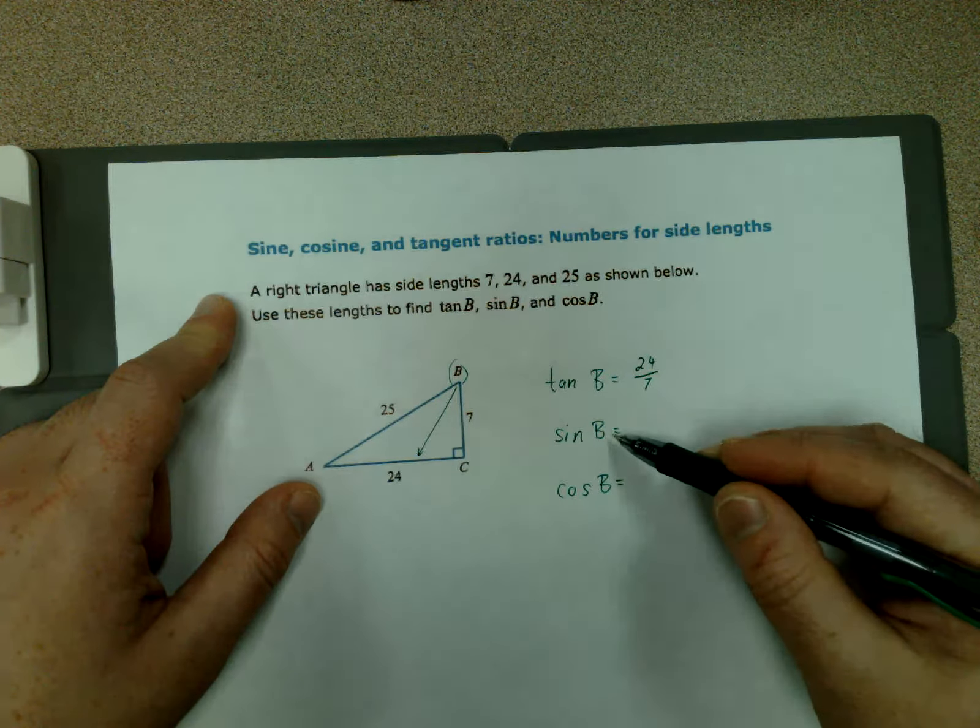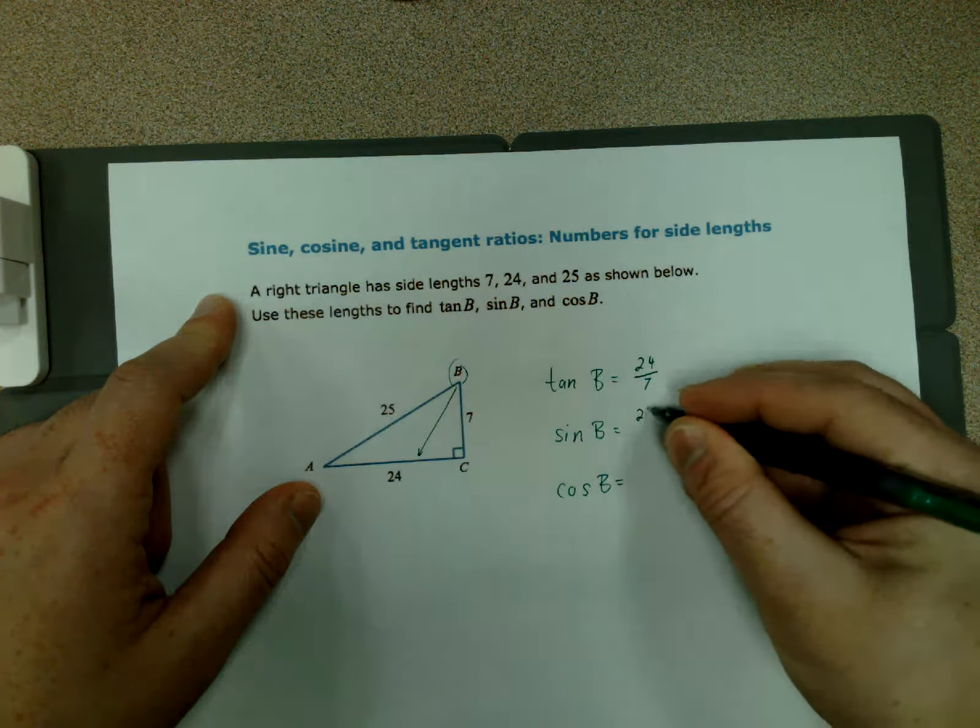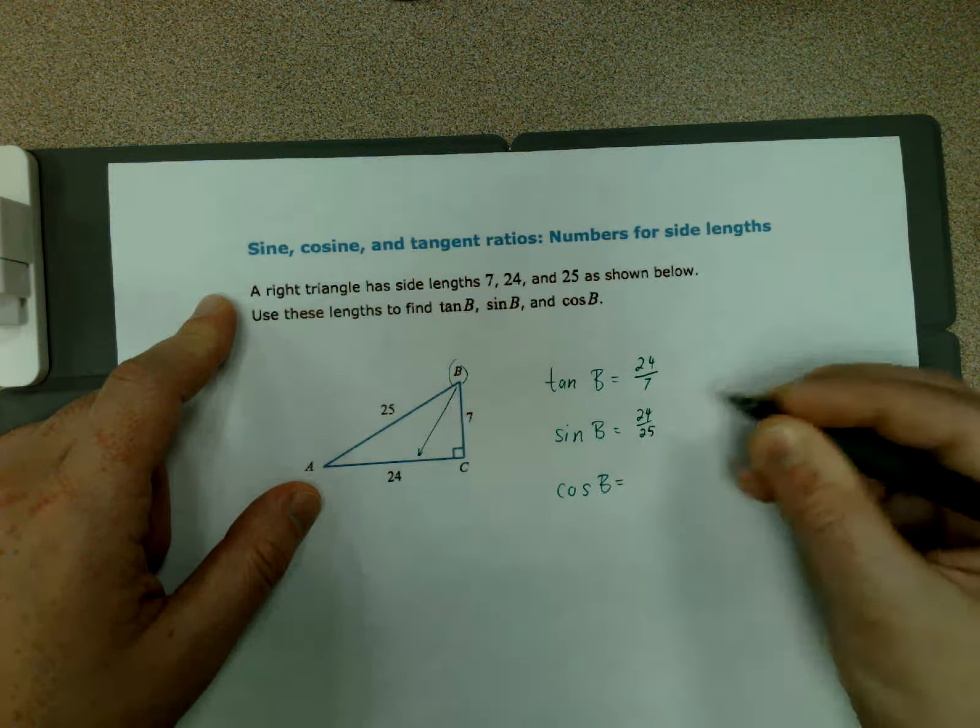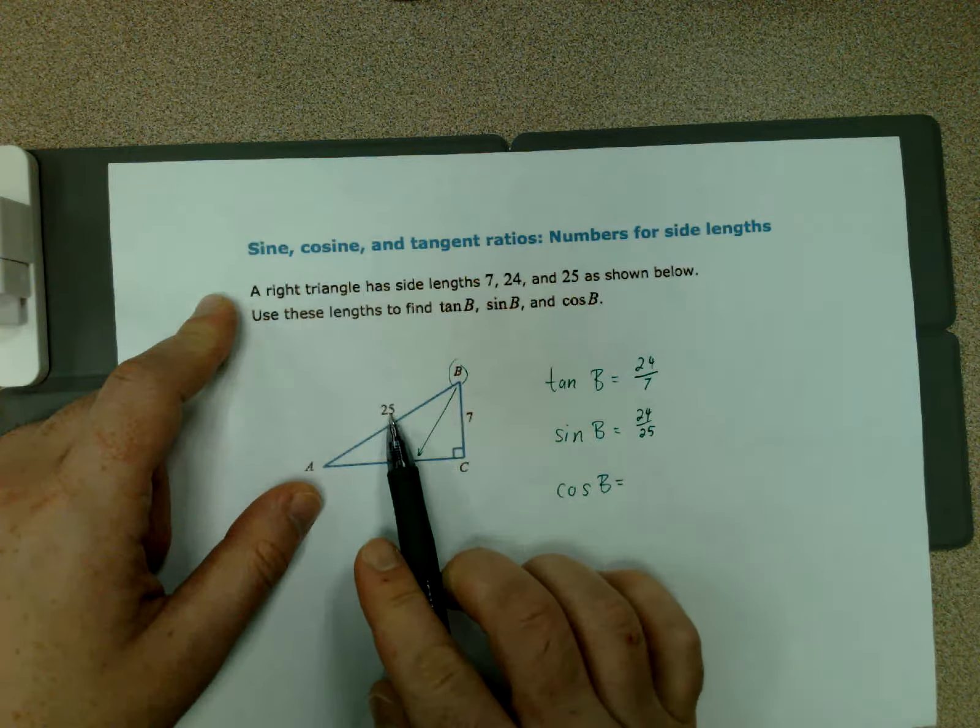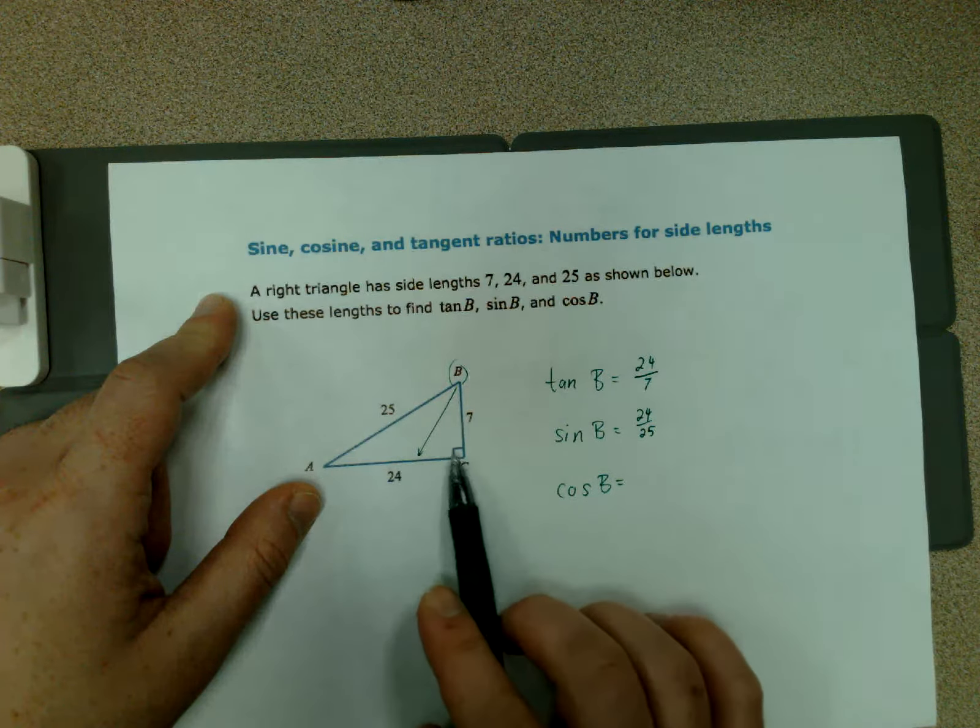Sine is opposite over hypotenuse. The opposite was 24, so 24 over 25. That's our hypotenuse for two reasons: one, it's the longest side, and two, it's opposite the 90-degree angle.